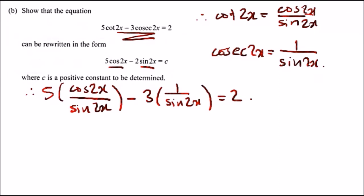Now what happens here? Notice how we've got sine 2x. What I would do is multiply everything by sine 2x to clear it. We're going to get 5 cos 2x minus 3 equals 2 sine 2x.